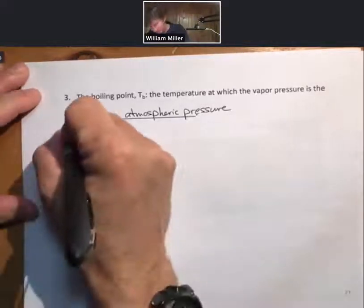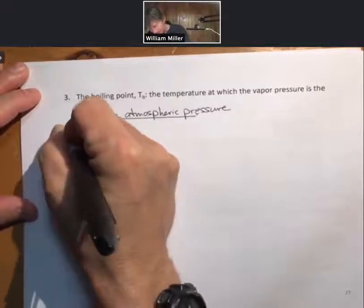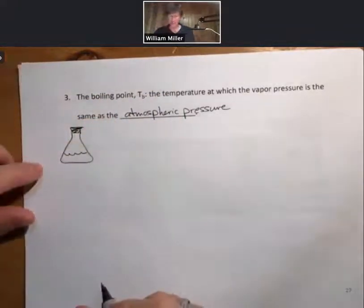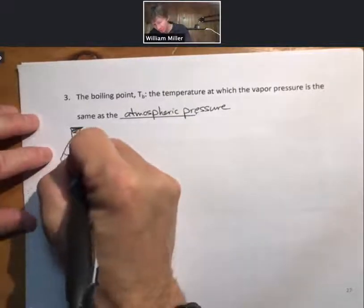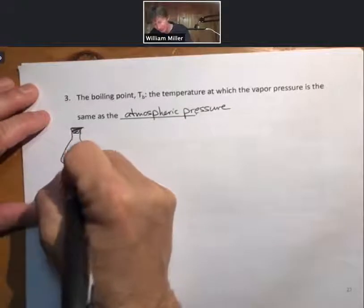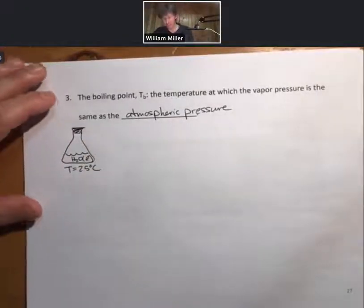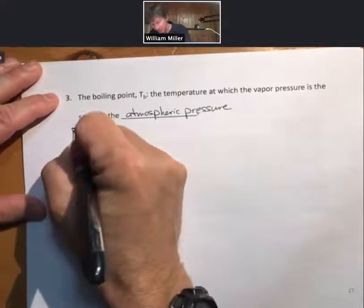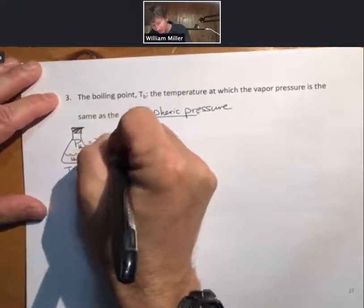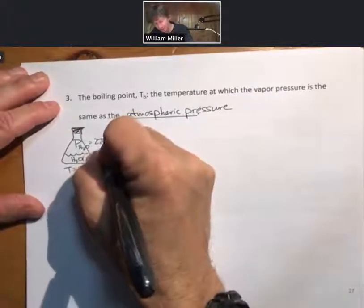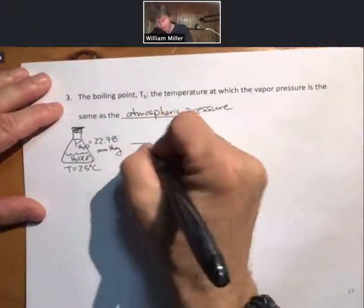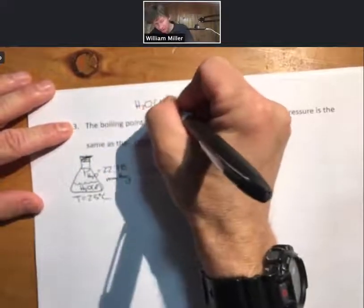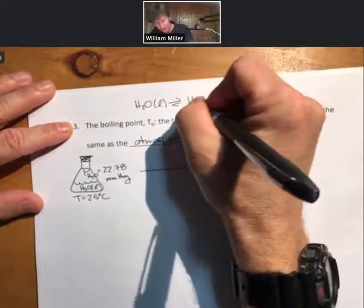Let's do a little thought experiment. Let's think about if we have a stoppered Erlenmeyer flask with some H2O liquid in it at T equals 25 degrees Celsius. What will happen is that the H2O liquid will evaporate until we get to equilibrium, and the partial pressure of H2O will equal 22.78 millimeters of mercury. We have H2O liquid at equilibrium with H2O gas.